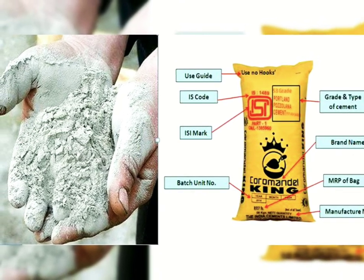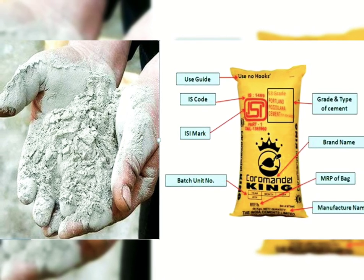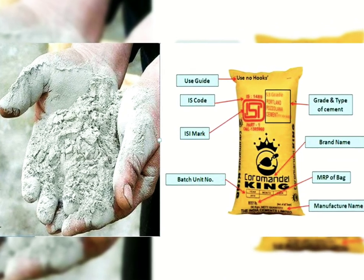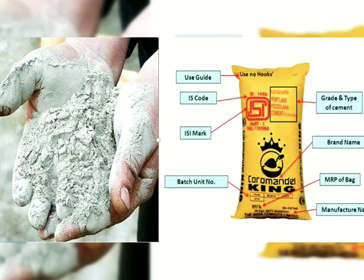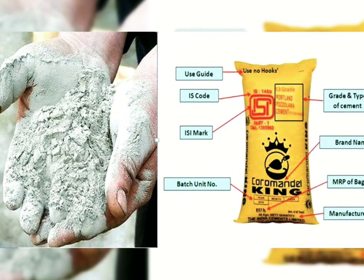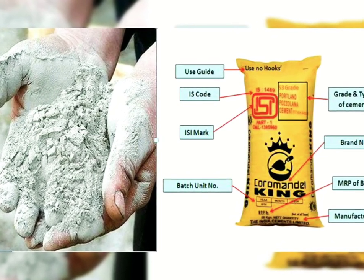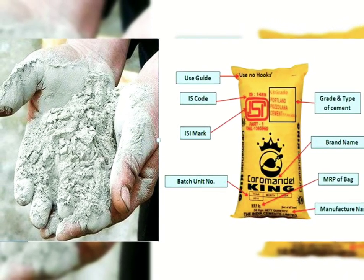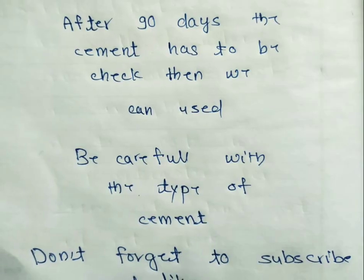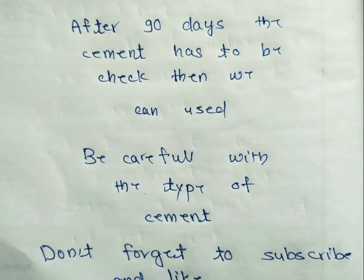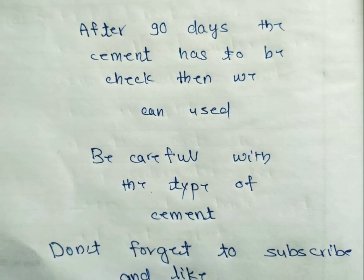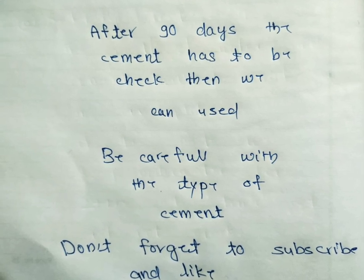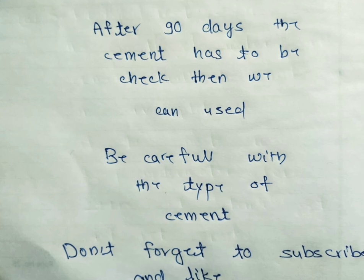Another very important property is the date of packing. The cement strength also depends on the packing date shown on the bag. Cement strength is related to time — fresh cement has more strength compared to old cement. The older the cement and the longer since the packing date, the lower its strength.